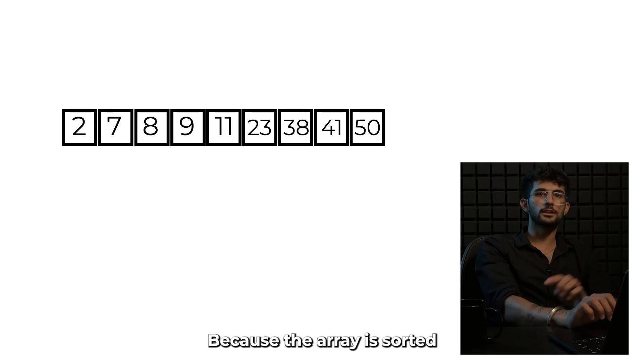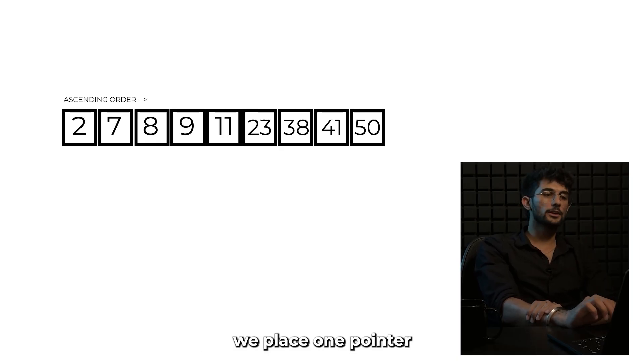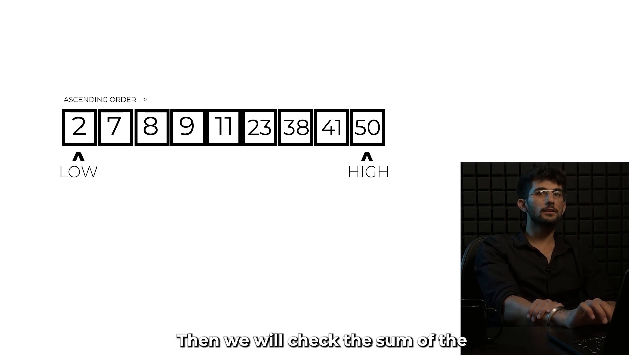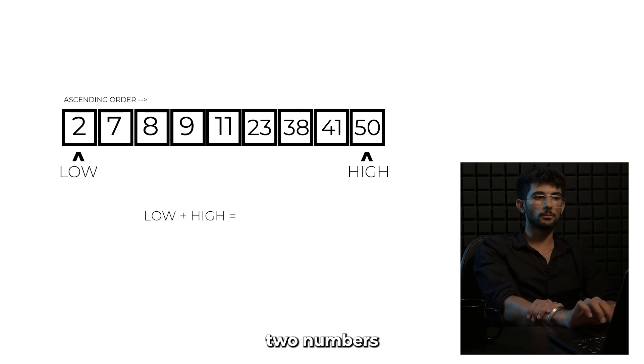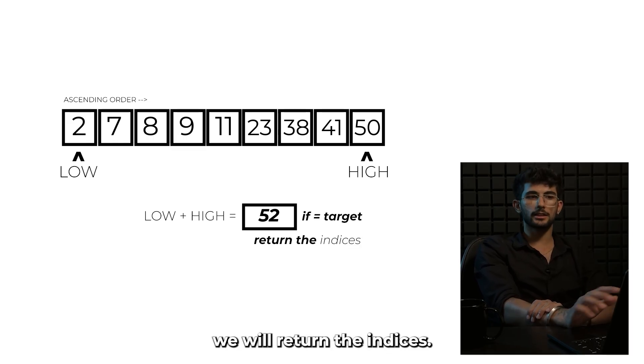So how do we do it? Because the array is sorted, a two pointer approach works perfectly here. We place one pointer at the start of the array and the second pointer at the last of the array. The starting one we'll call the low and the end one we'll call the high. Then we will check the sum of the two numbers, low plus high. If the sum is equivalent to target, we will return the indices.